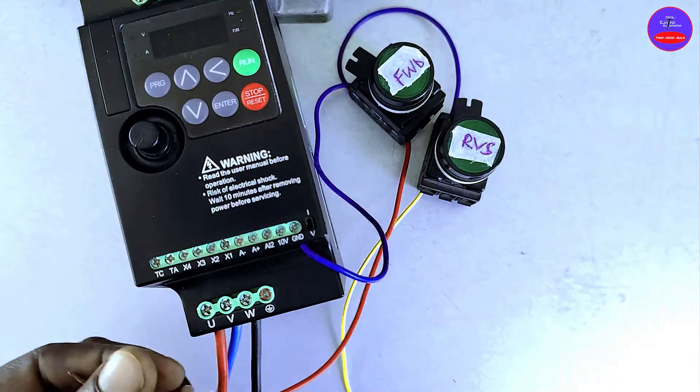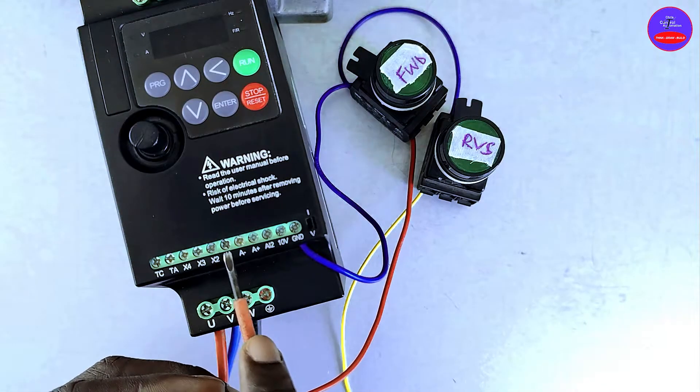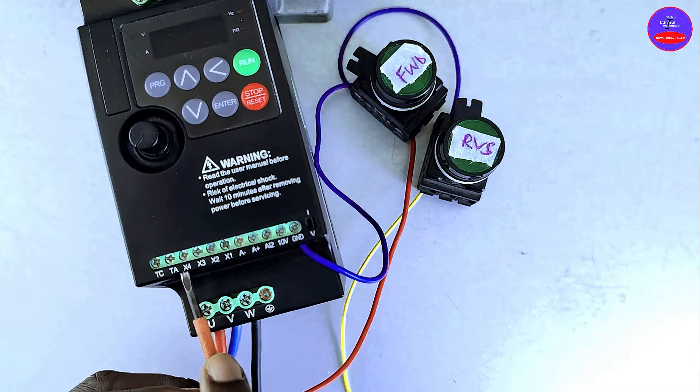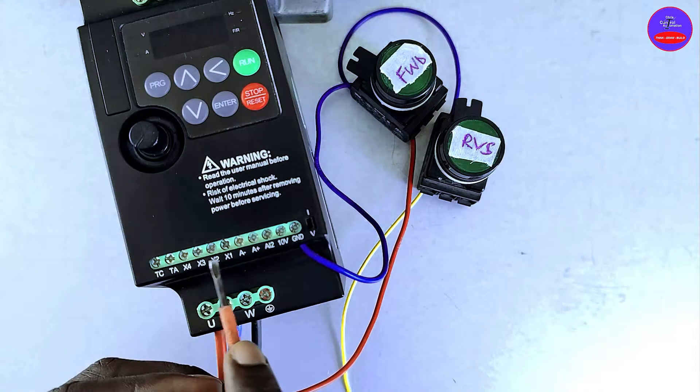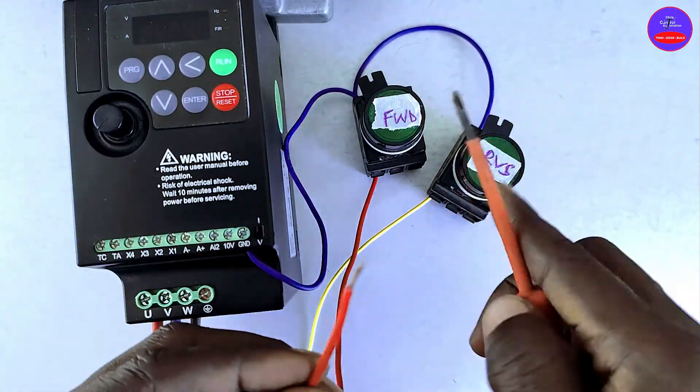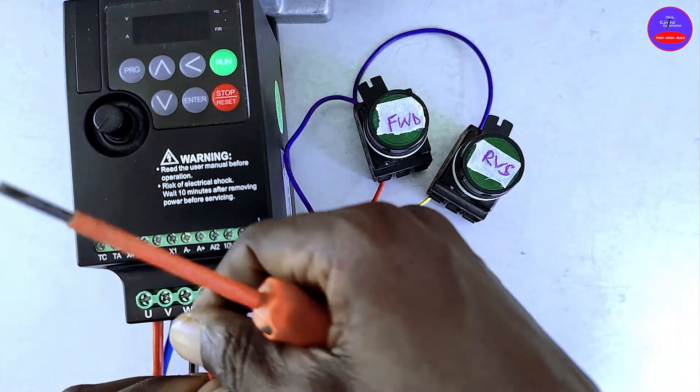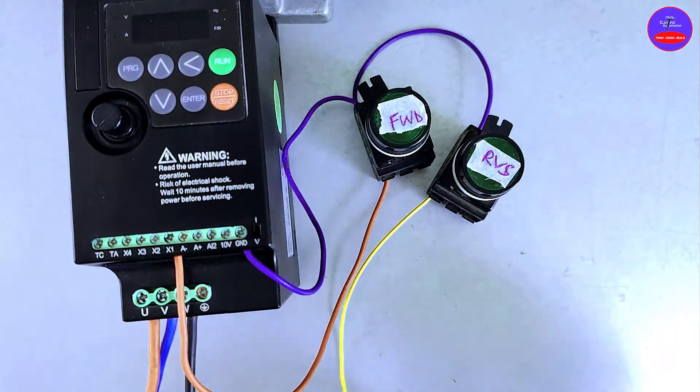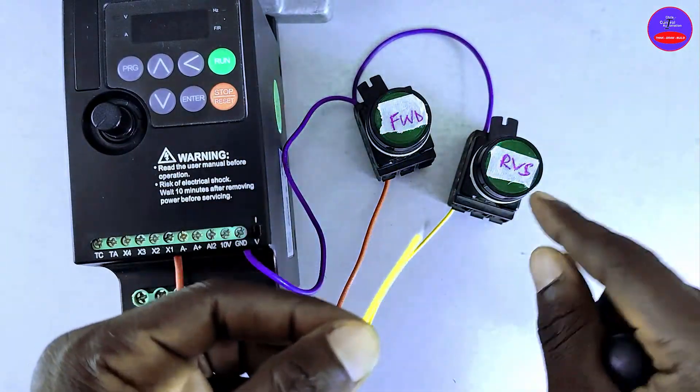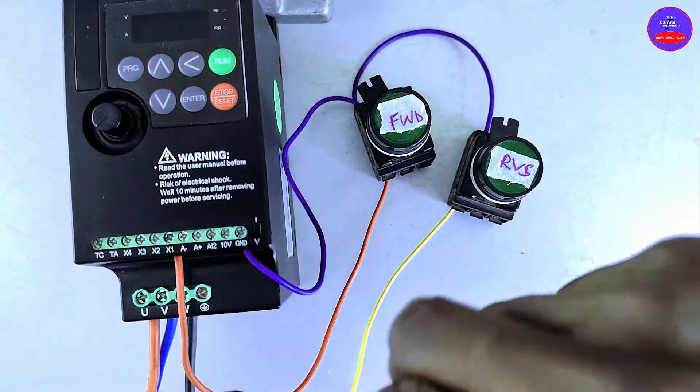We have control terminals X1, X2, X3, X4. We are going to use any two of these. The red cable from the forward push button will connect at X1. The yellow cable from the reverse button will connect at X2.